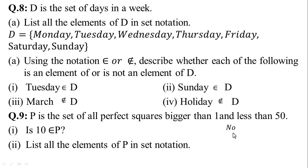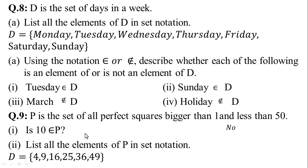In the second part, list all the elements of P in set notation. According to the given condition, P contains perfect squares: 2² = 4, 3² = 9, 4² = 16, 5² = 25, 6² = 36, and 7² = 49. So P = {4, 9, 16, 25, 36, 49}.